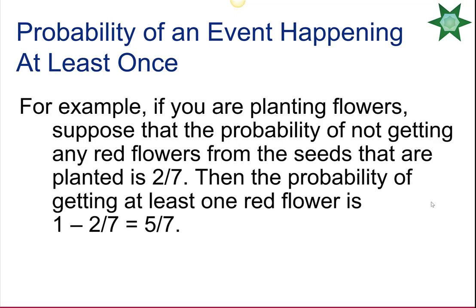The probability of an event happening at least once equals 1 minus the probability that the event does not happen. For example, if the probability of not getting any red flowers from planted seeds is 2/7, then the probability of getting at least one red flower is 1 − 2/7 = 5/7.